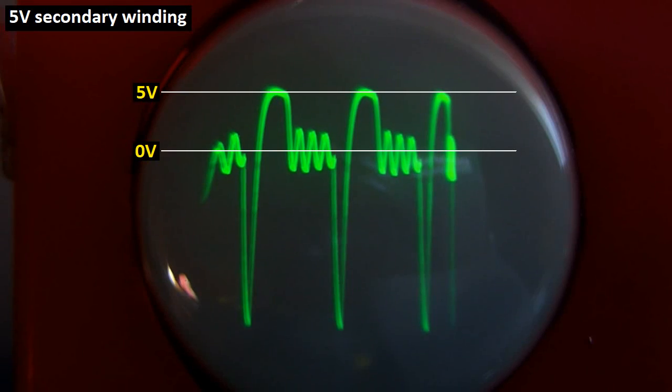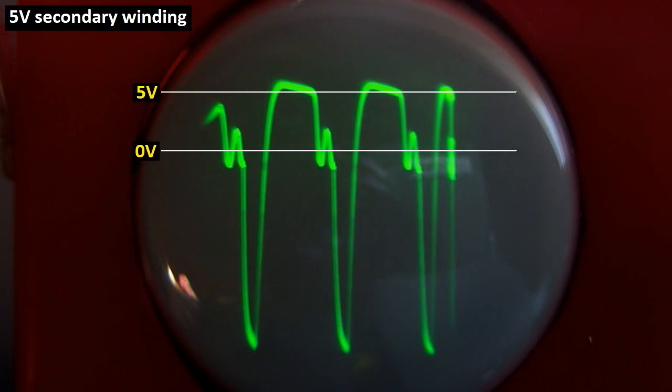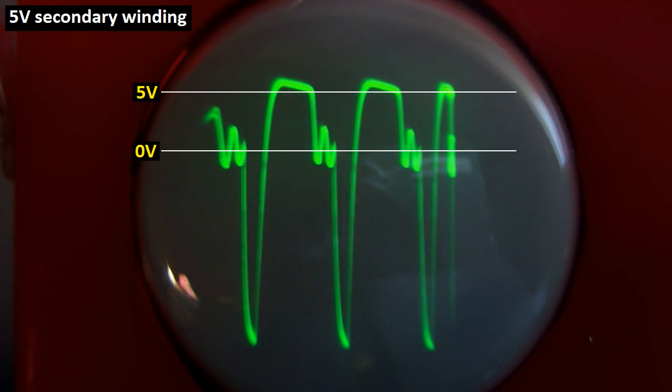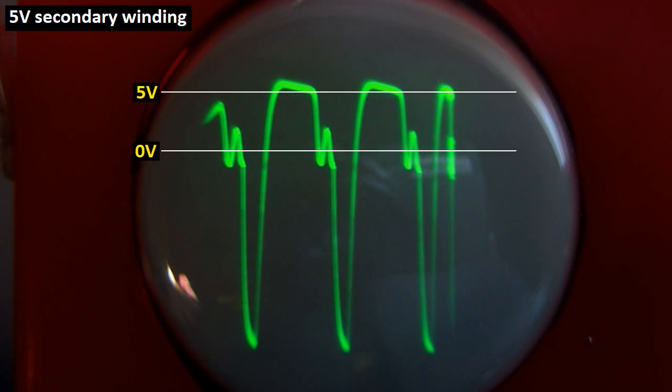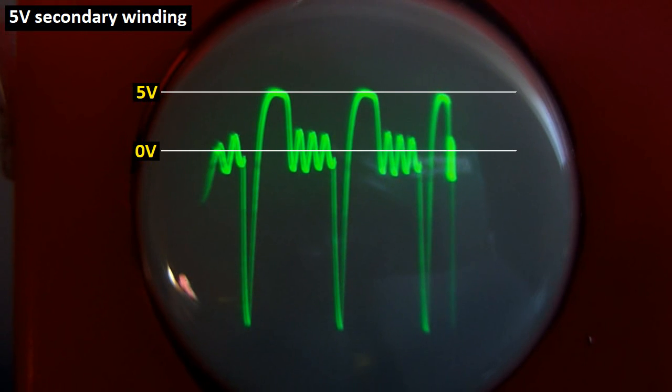So now let's try to see it on a scope. This is at a light load and this is at a heavy load. Now I'm drawing less current and now more current. High current, low current at the output.